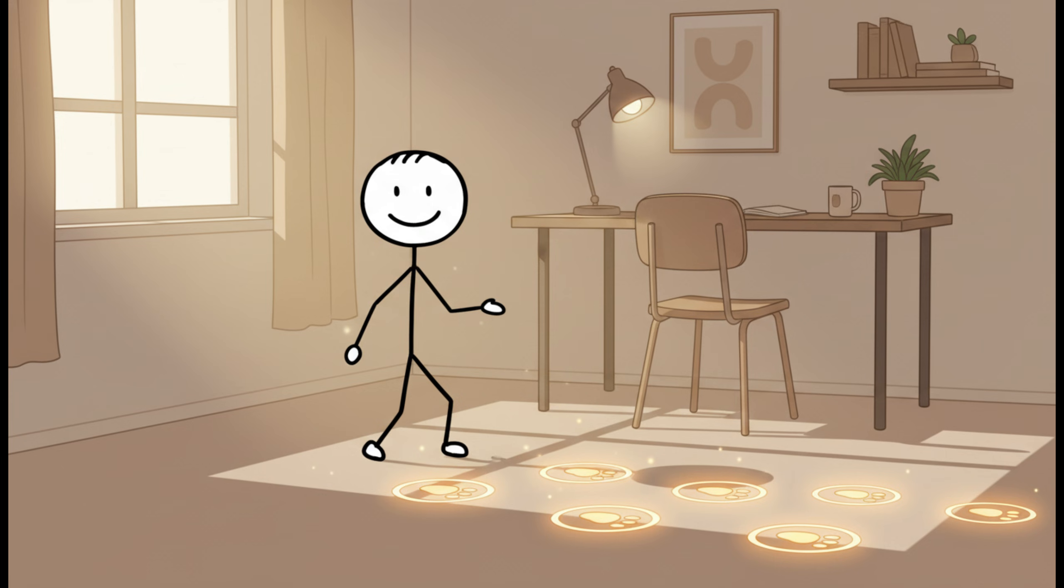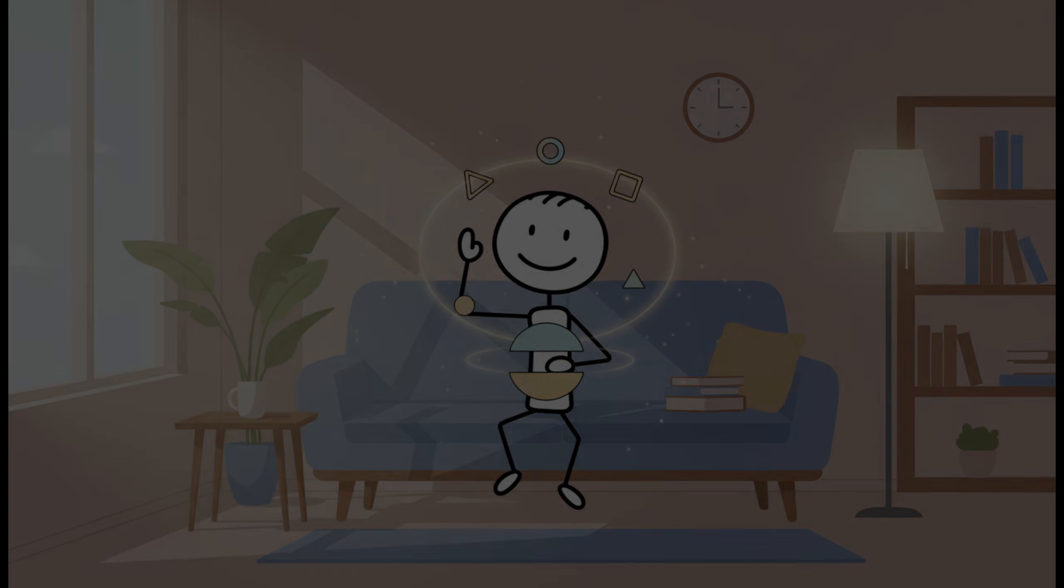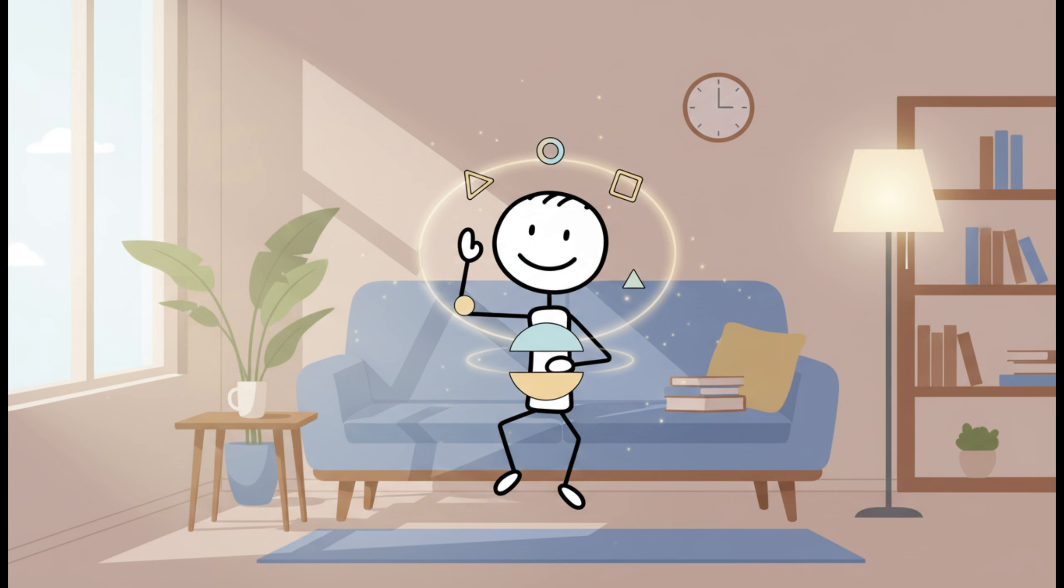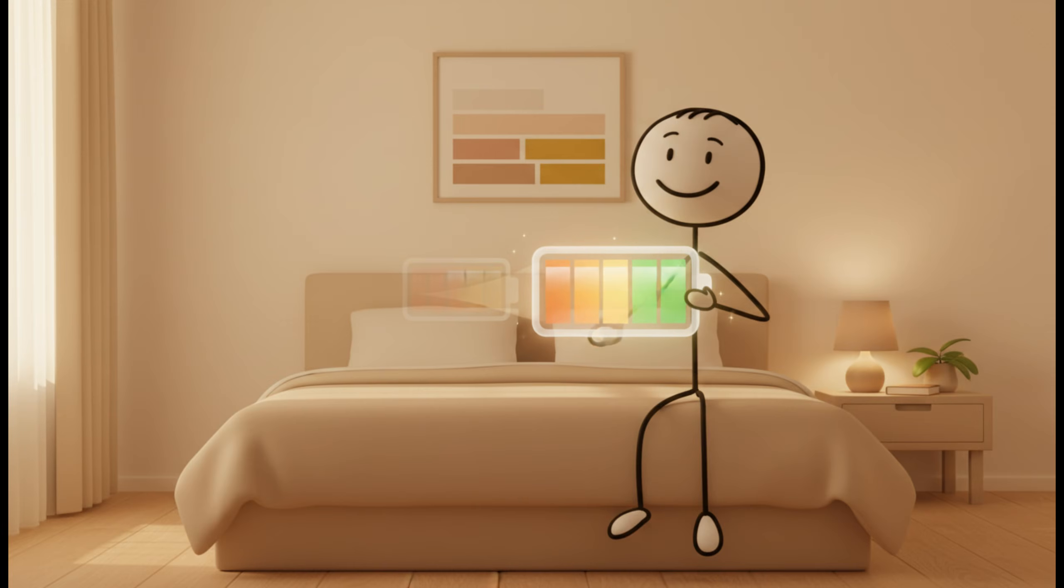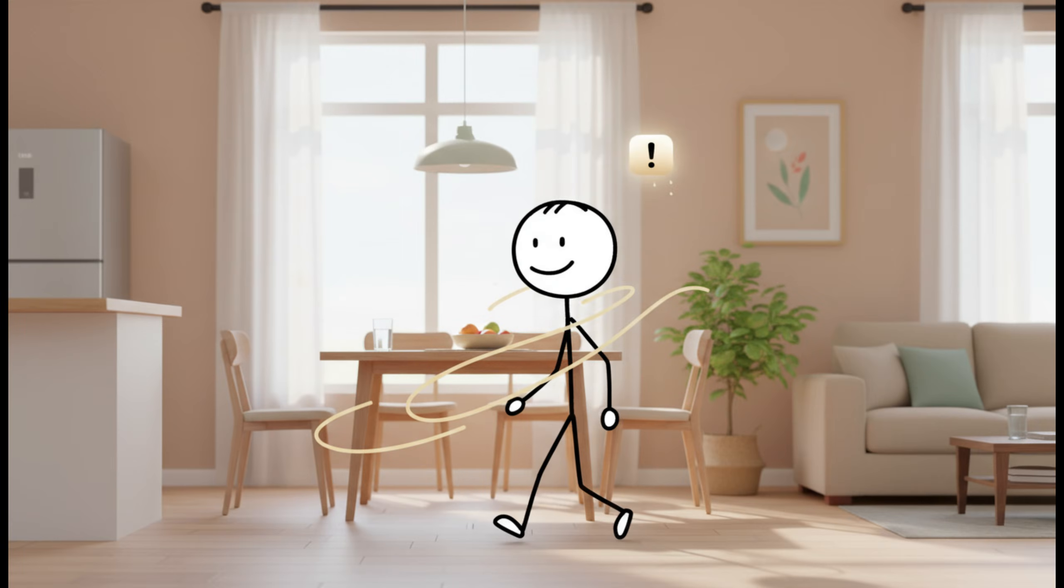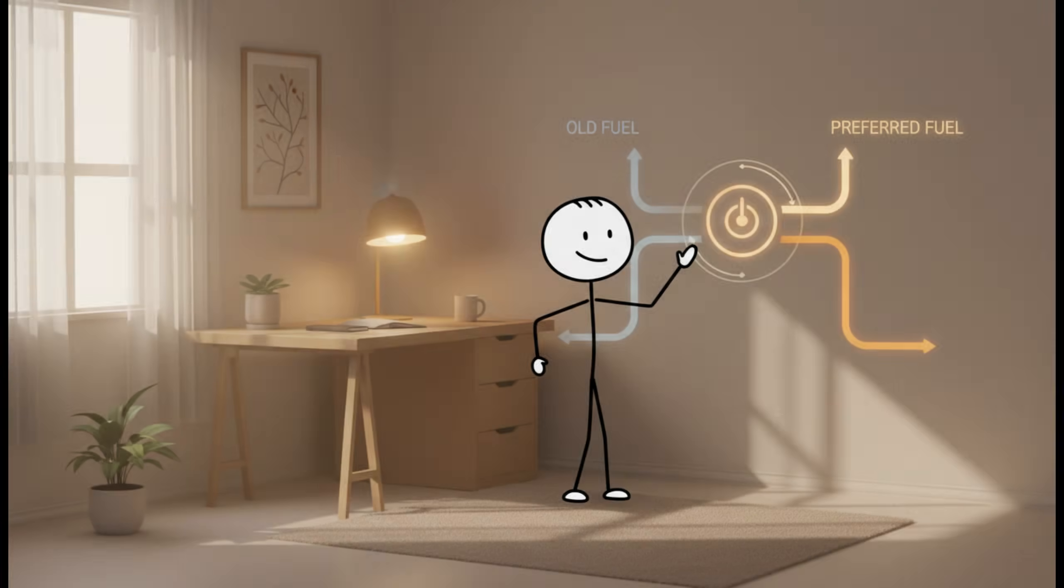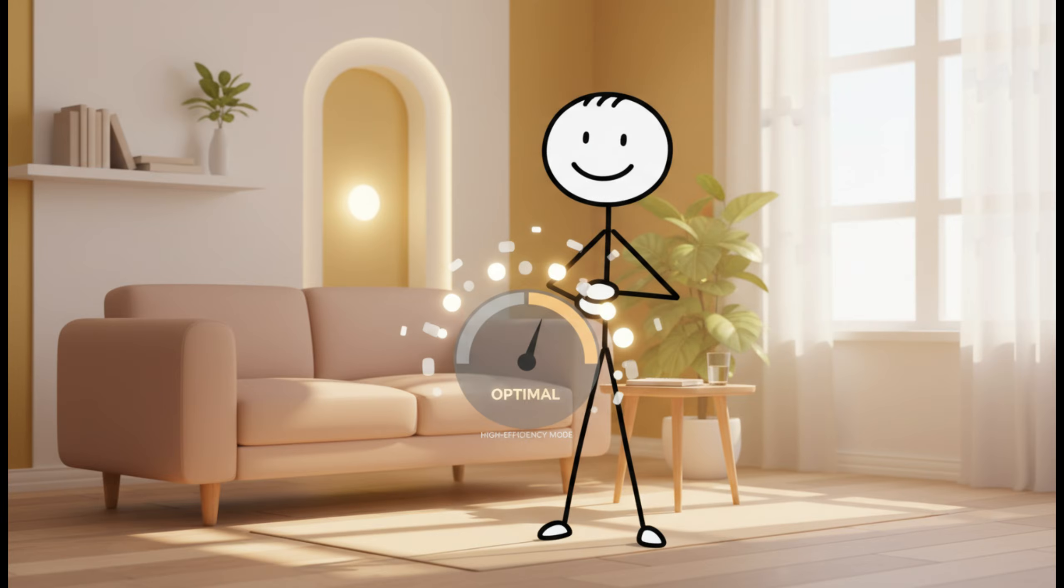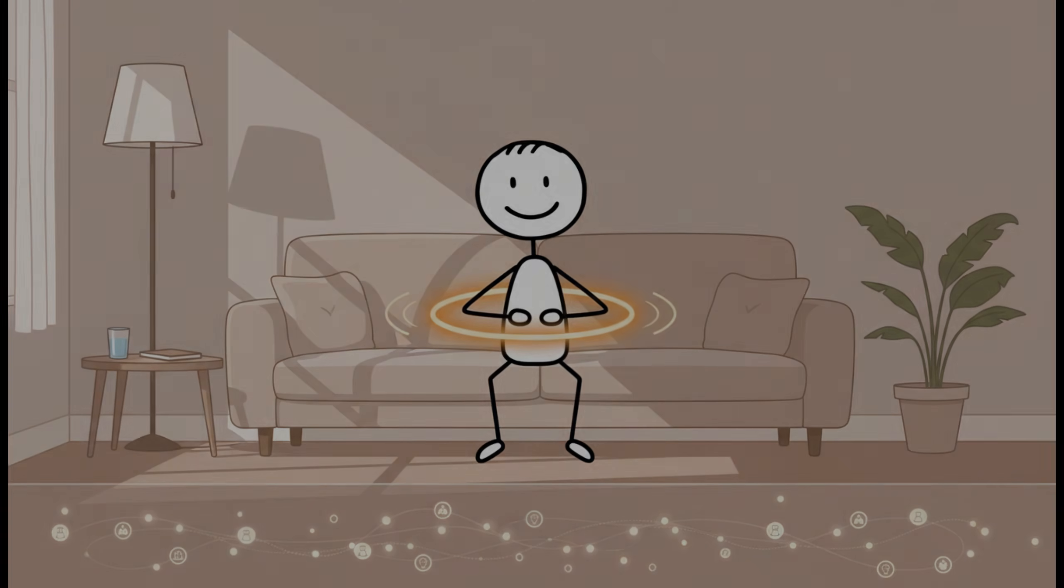Somewhere between hour 30 and hour 36, Helen's body unlocked a biological switch that modern science considers one of the most extraordinary survival mechanisms ever discovered. This is the point where the quiet cleanup of earlier hours transforms into something far more purposeful: autophagy, the cellular process that doesn't just clear debris but rebuilds life from the inside out. Under the microscope, it would look like tiny bubbles forming around damaged parts of her cells, gently pulling them in, breaking them down, and repurposing them into fresh, functional components. It's not destruction, it's renovation.